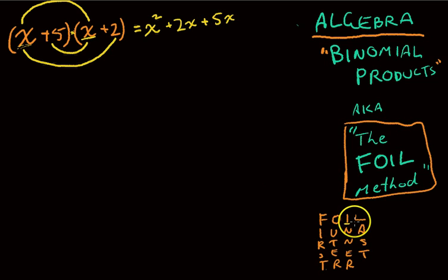And the last one here is going to be last. That is the last term in each bracket. So in this case it's the positive 5 and the positive 2. That's the last term in the last bracket. So positive 5 times positive 2 will make positive 10.